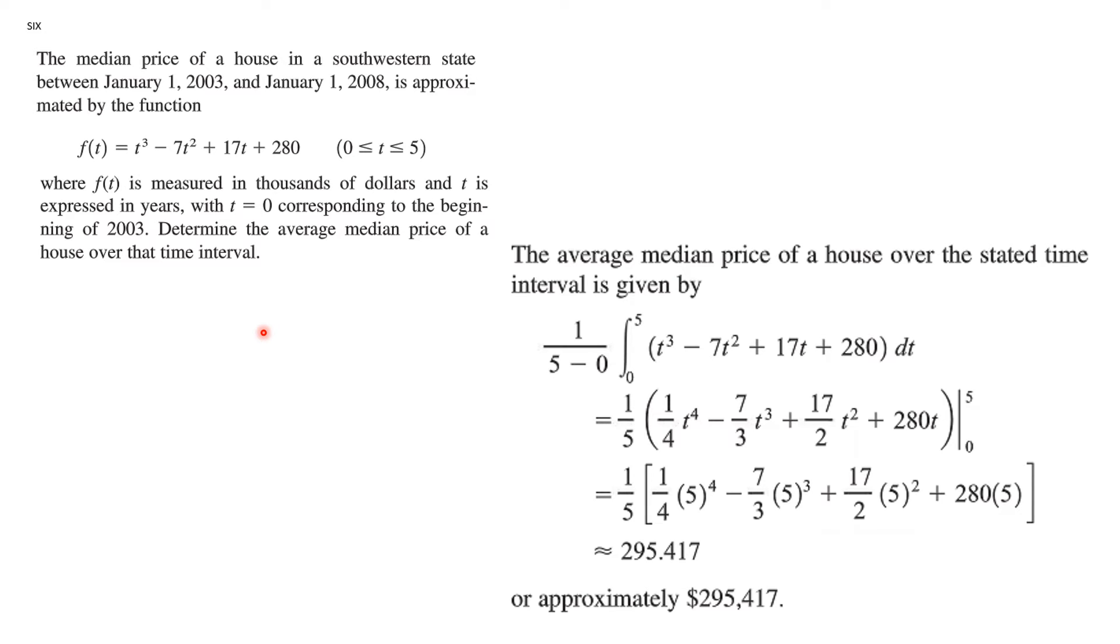Okay. The median price of a house from those dates is approximated by this function. Determine the average median price. Well, this goes from over an interval of length 5. We integrate the function and divide it by 5. So we integrate here. We add 1 to the exponent, divide by the new exponents. All the way through, evaluate this as 5 and 0. 0 is easy to evaluate because all those are 0, but the other one is not. And so you end up with approximately 295,417, because this was in thousands.